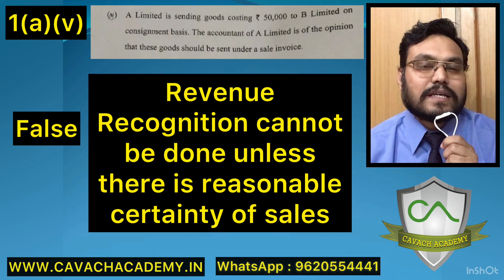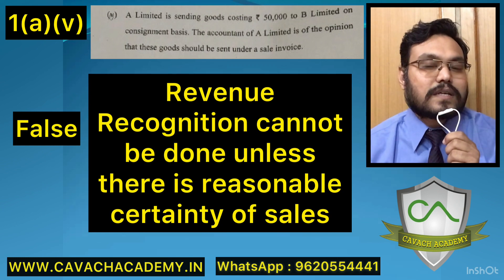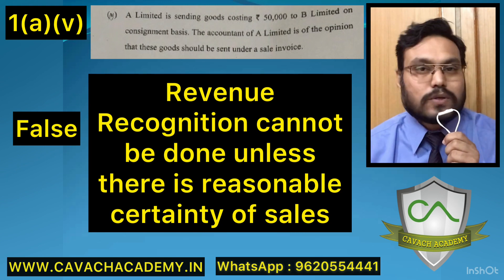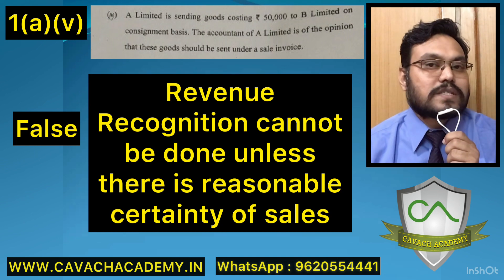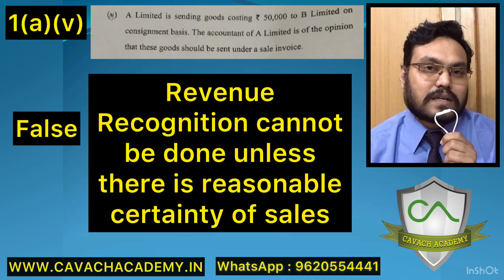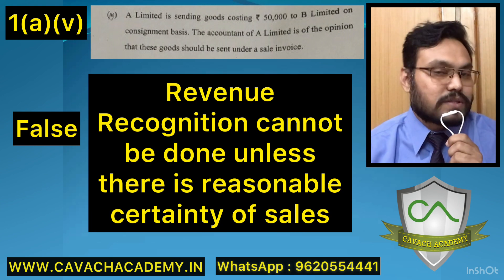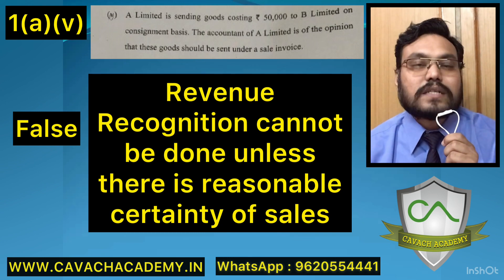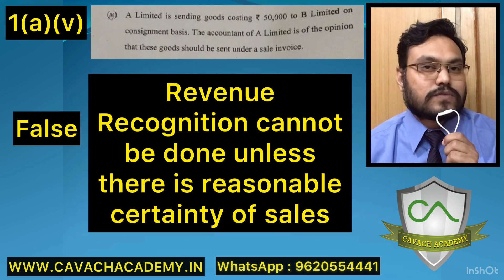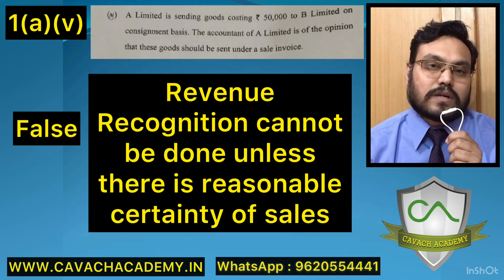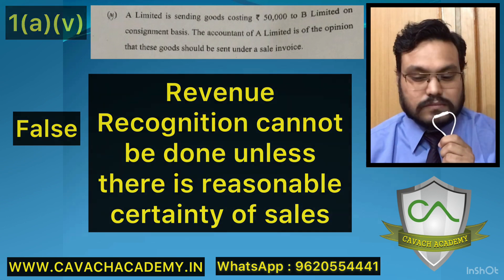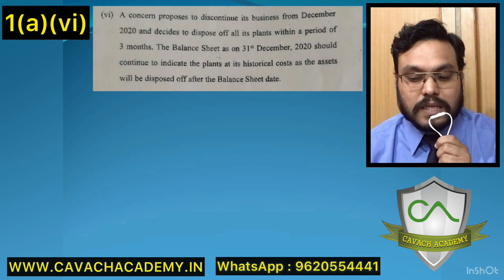When sending goods to a consignee, there is no guarantee the consignee will be able to sell all the goods — there can be closing stock. So just because we send goods to a consignee, we cannot treat it as sales. A sale happens only when the consignee confirms he was able to sell. Therefore, giving goods on a sales invoice is wrong. The answer is FALSE — the goods should not be sent under a sales invoice; instead, they should be sent using a consignment note.